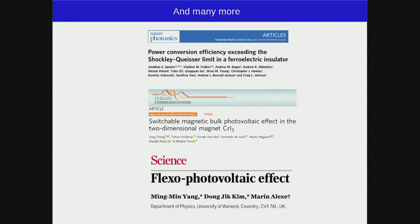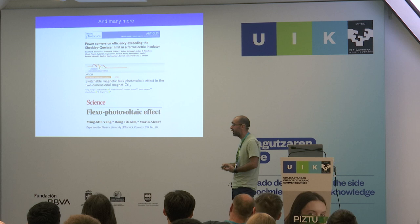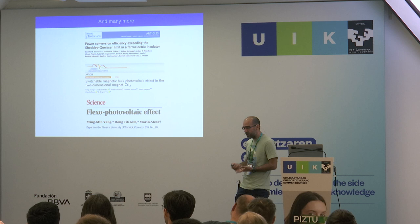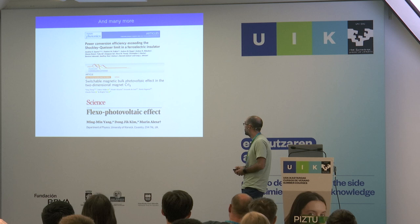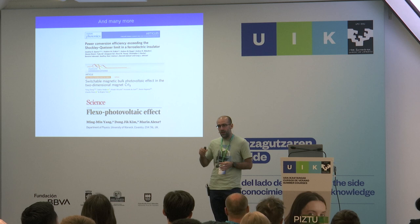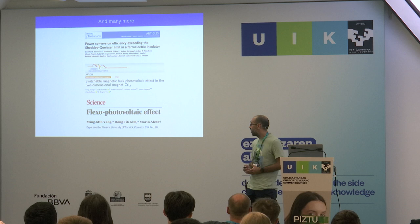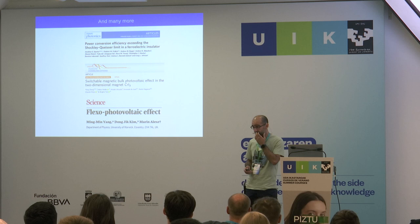There are many more examples. People are really trying to overcome the efficiency drawback and get more efficient materials. There is also a nice connection to magnetism that is now starting to grow, and one can even think of doing things like bending an inversion-symmetric material with a needle to locally break inversion — this is called the flexo-photovoltaic effect.